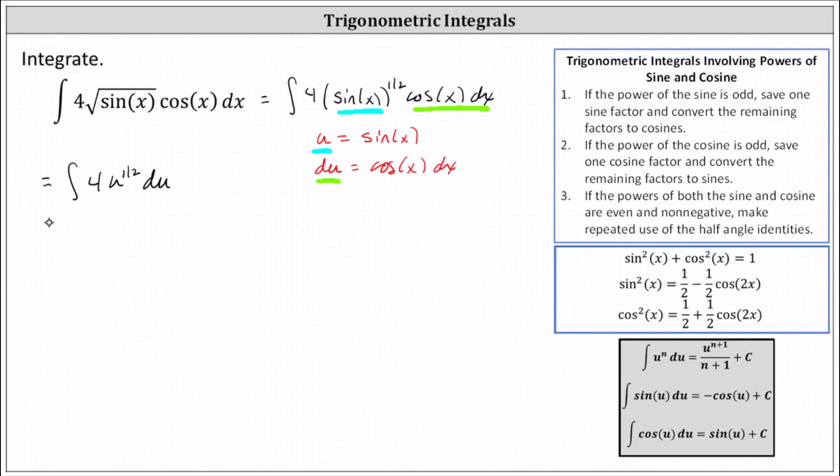And now we integrate with respect to u, which is 4 times u to the power of 1 half plus 1 is u to the power of 3 halves. And now we need to divide by 3 halves, which is equivalent to multiplying by the reciprocal of 2 thirds, and then plus c.